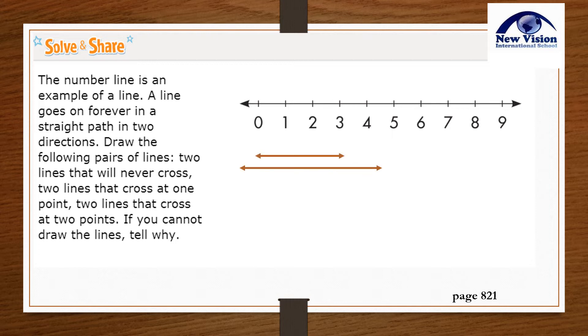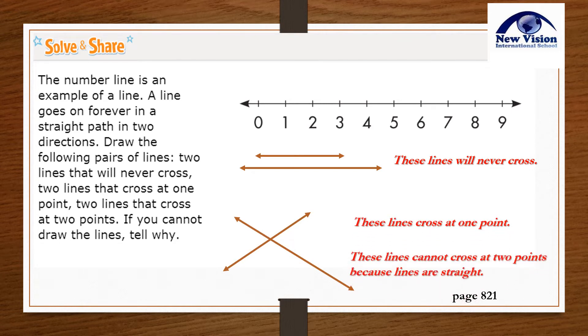Answer. These lines will never cross. These lines cross at one point. And also, these lines cannot cross at two points because lines are straight.